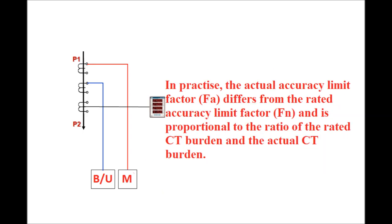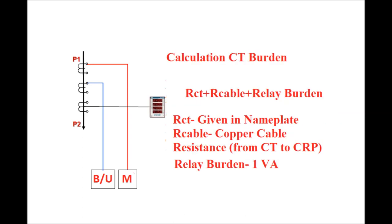In practice, the actual accuracy limit factor FA will differ from the rated accuracy limit factor as defined on the nameplate of the CT. It is proportional to the ratio of the rated CT burden to the actual CT burden. Let us first calculate the CT burden, then we will show how the CT burden depends on the accuracy limit of the protection class CT.